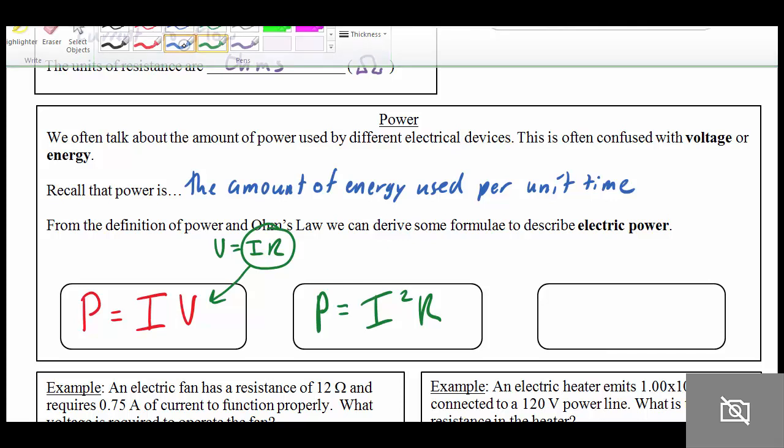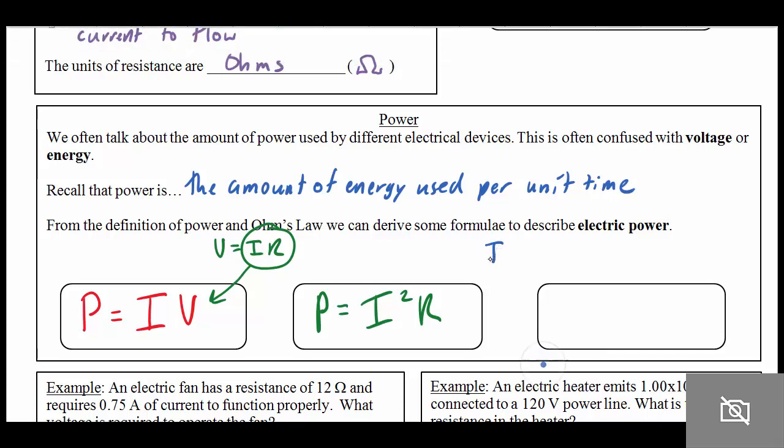Another version of Ohm's Law would, just to rearrange things, we could say that I equals V over R. If we substitute this in here for current instead, we get a third version of our formula which says power is equal to V times V divided by R, which is V squared over R. So any of these three formulas will allow us to calculate the power. It really just depends on what we know about the circuit, whether we know the voltage or the current or the resistance.